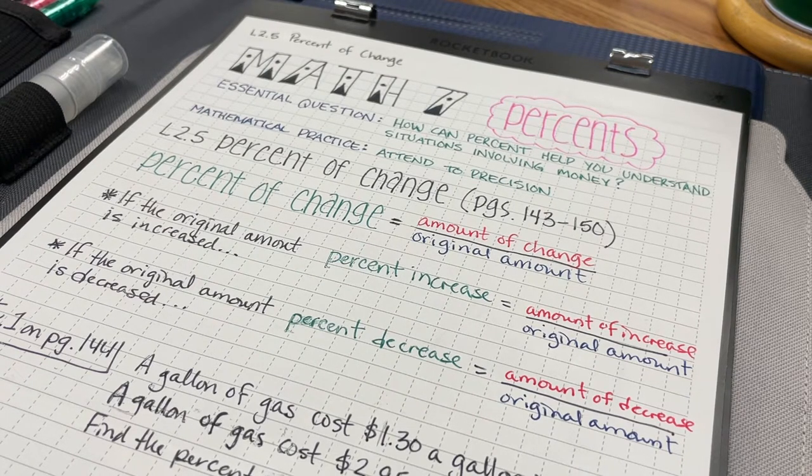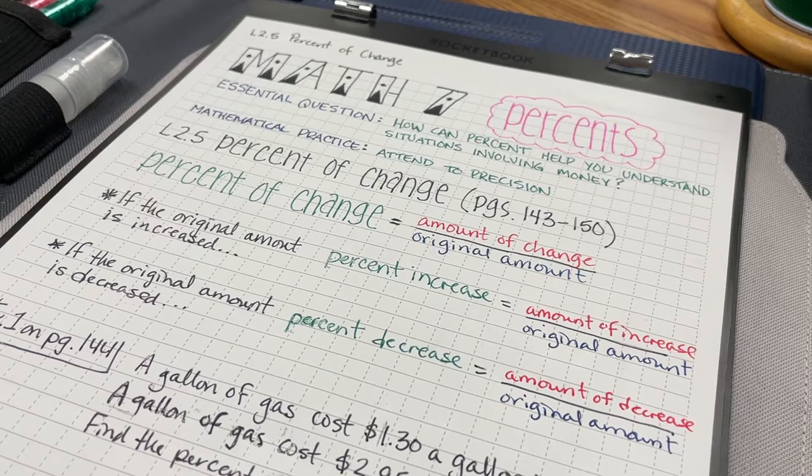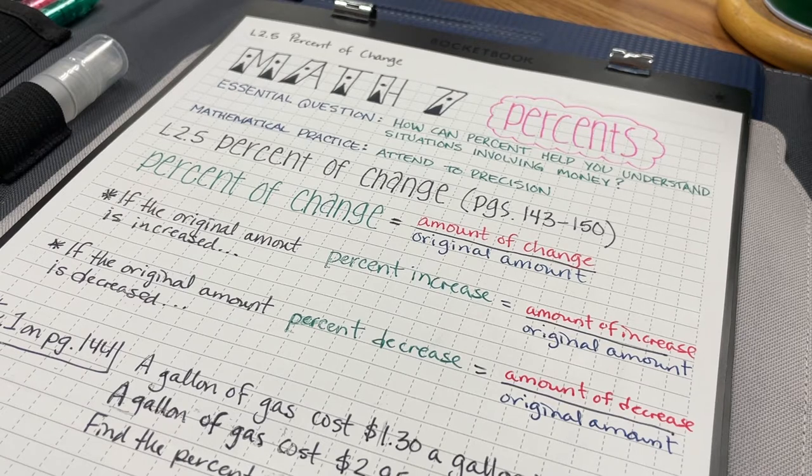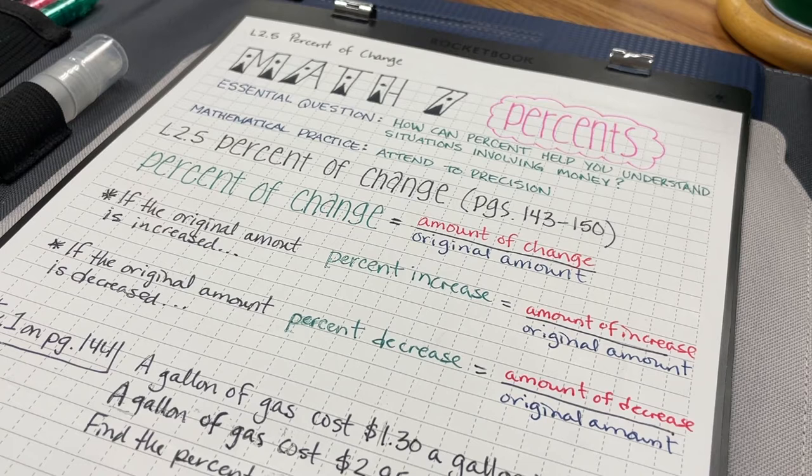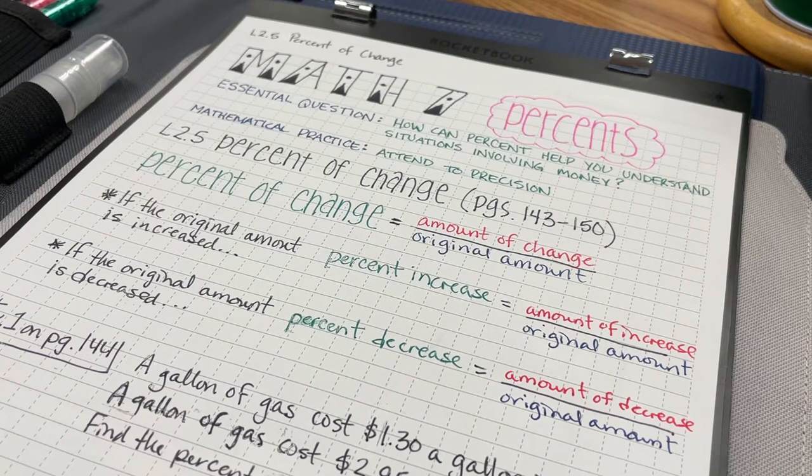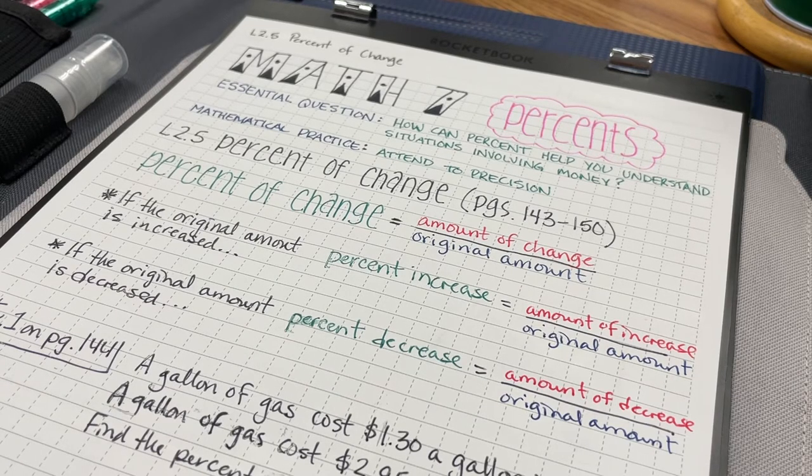If the original amount is increased, we can think of it as a percent increase, and that'll be the amount of the increase divided by the original amount. Now, if the original amount is decreased, we can consider that a percent decrease, and that'll be the amount of decrease divided by the original amount.